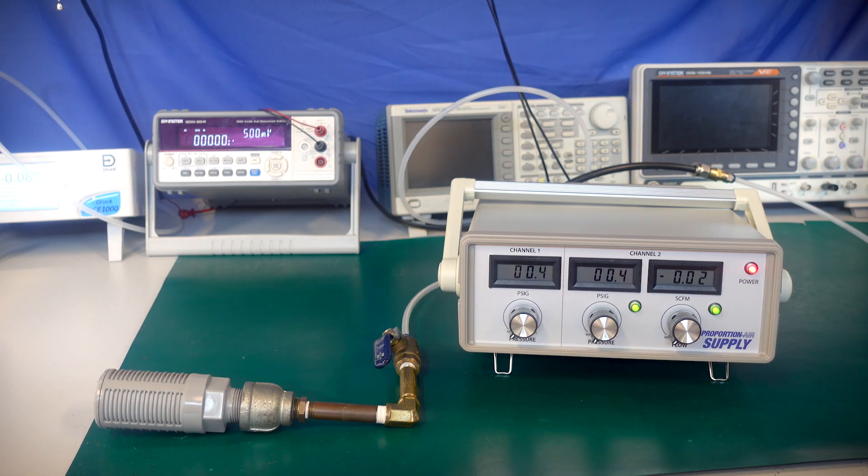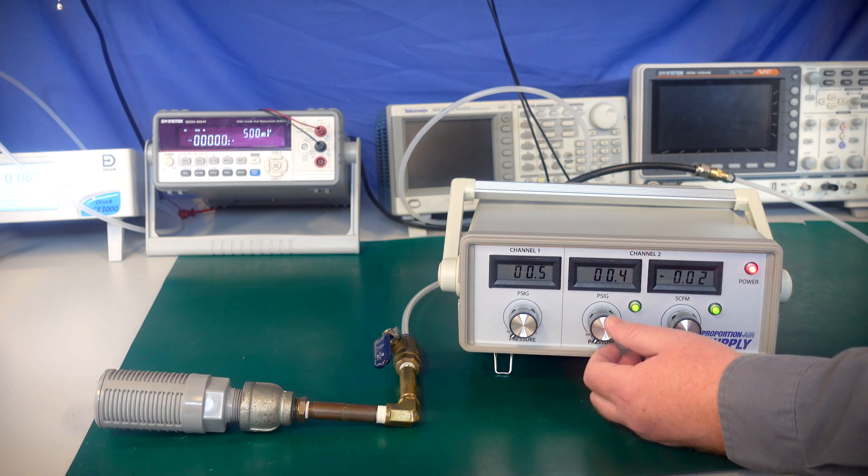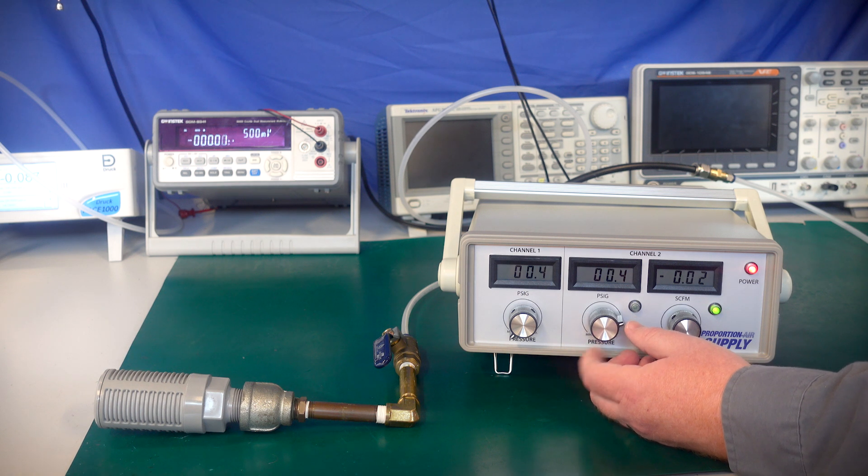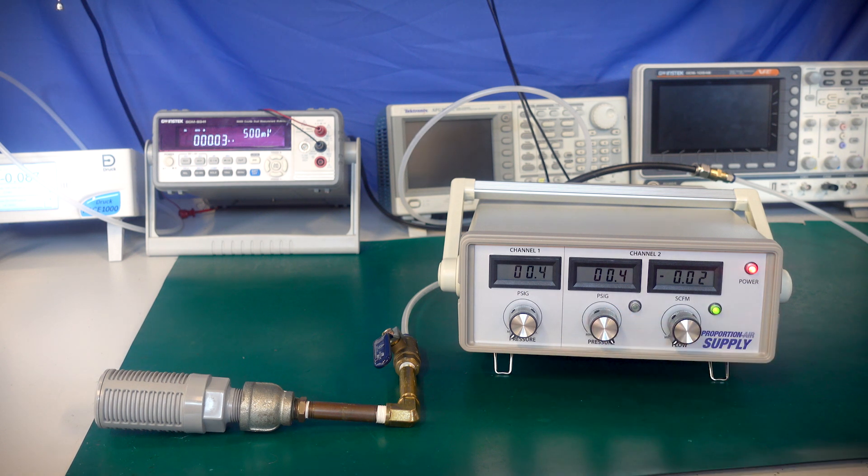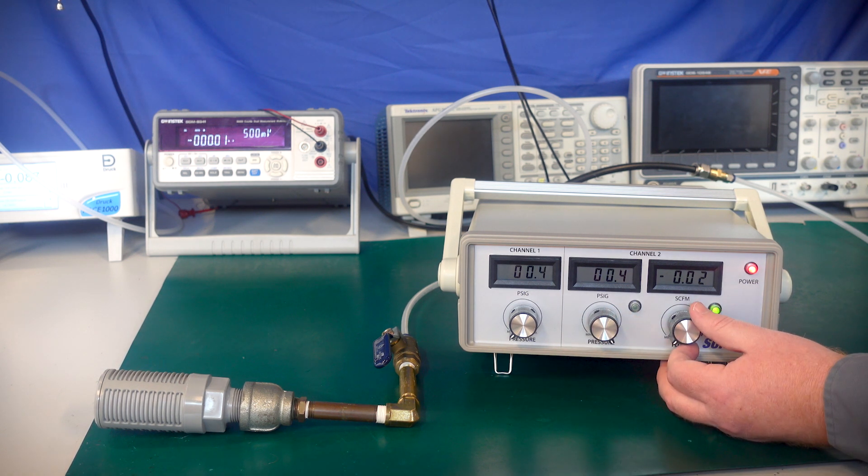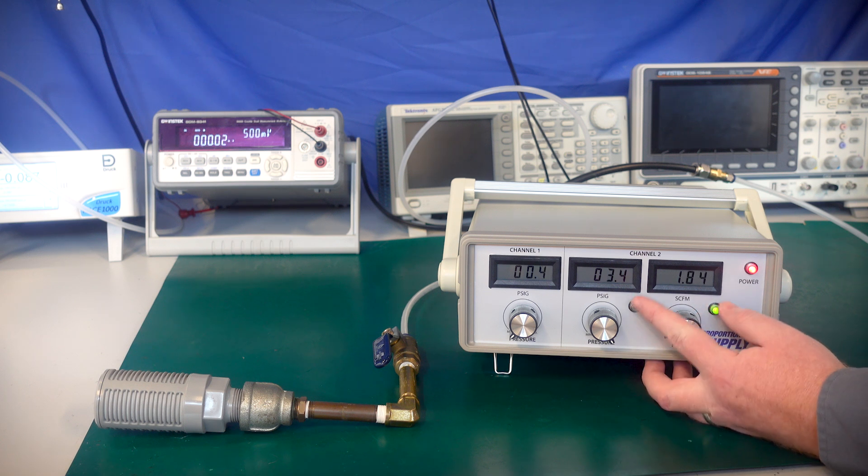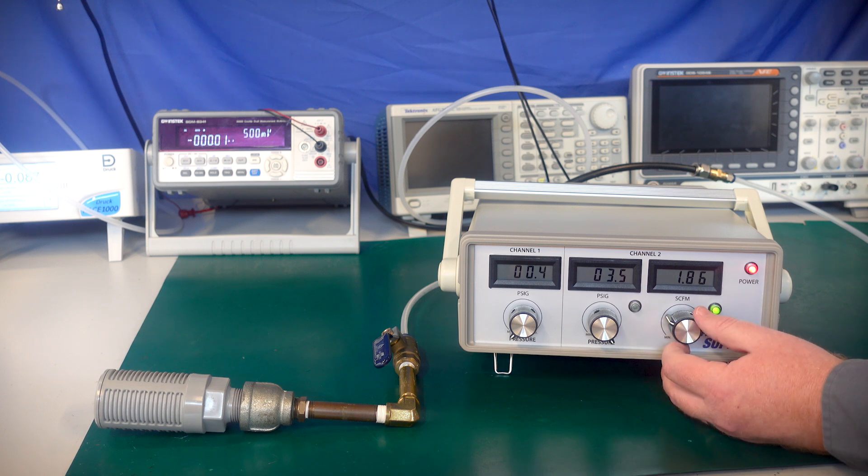The other option is flow-limited pressure. Here we will increase the pressure limit to the maximum, and then as we turn the flow knob, you'll see the pressure increases as needed to give the desired flow.